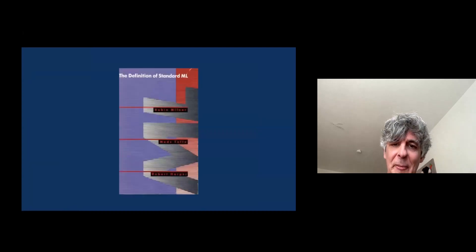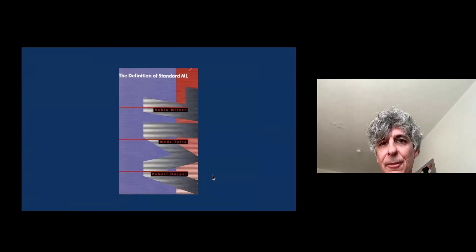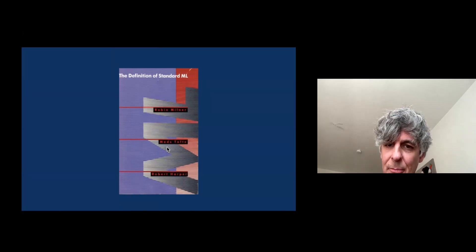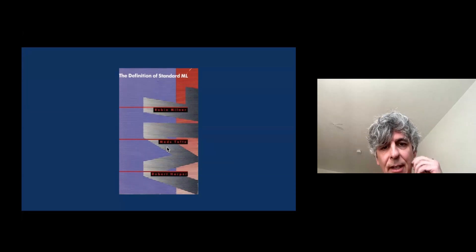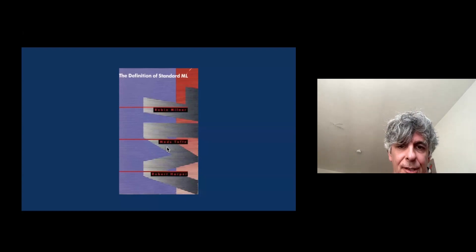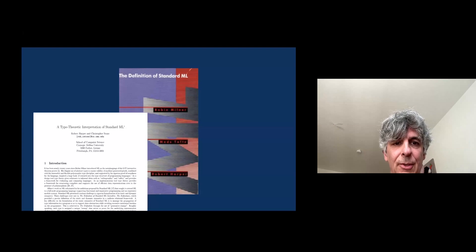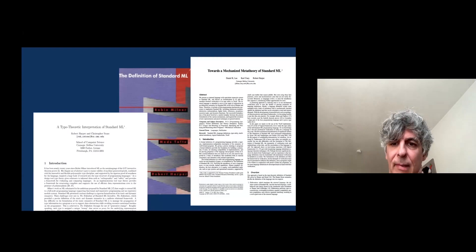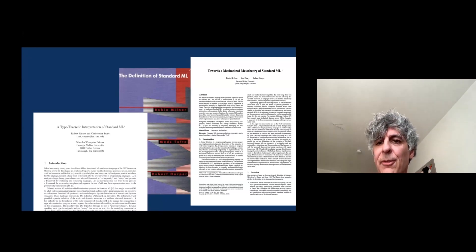We should be able to do better, and we have known how to do better for a long time. One of the pioneers of doing better was this book. One author you might recognize at CMU is Bob Harper. This is the specification of Standard ML, which came out in 1990, and it was the first general-purpose language with a completely formalized semantics specification — both execution and type checking.